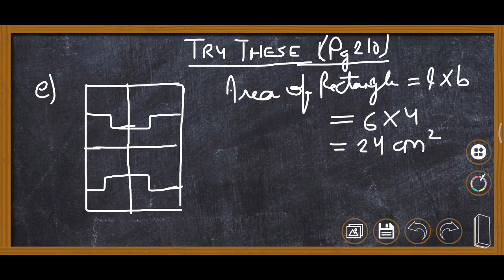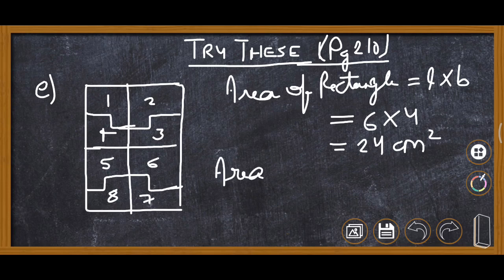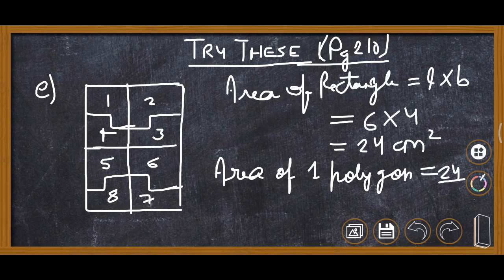This is part E of the same 'Try These.' The figure is divided into 8 parts: 1st, 2nd, 3rd, 4th, 5th, 6th, 7th, 8th. The area of one polygon is found by dividing by 8: 24 upon 8. Since 8 threes are 24, the answer is 3 centimeter square.